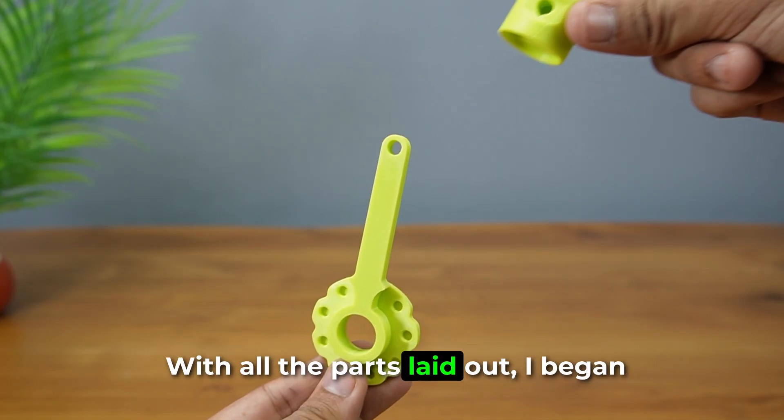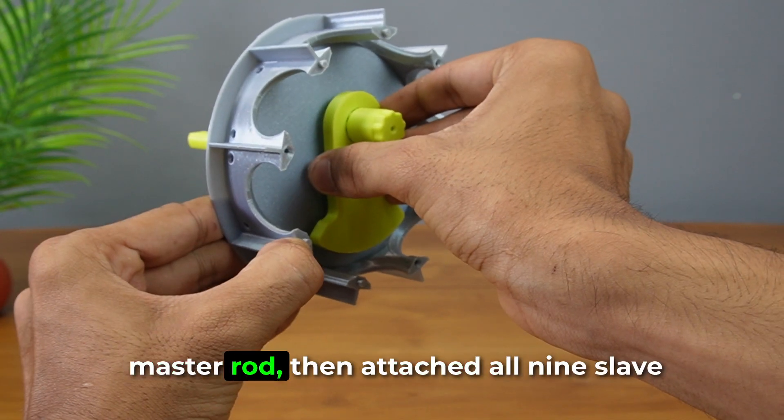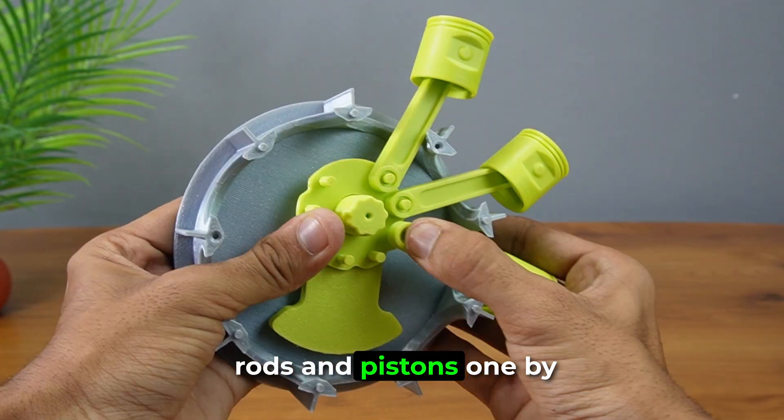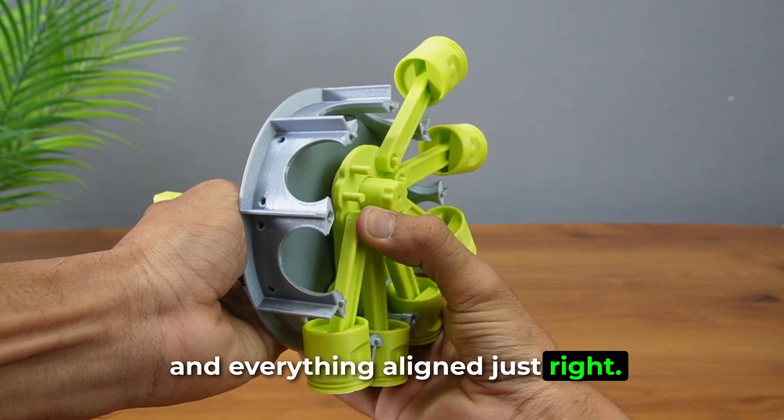With all the parts laid out, I began assembly. Starting with the crankshaft, I installed the master rod, then attached all nine slave rods and pistons one by one. The casing fit perfectly, and everything aligned just right.